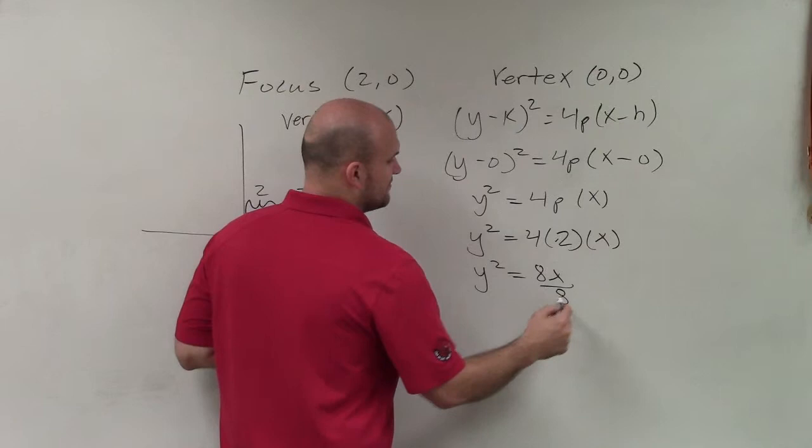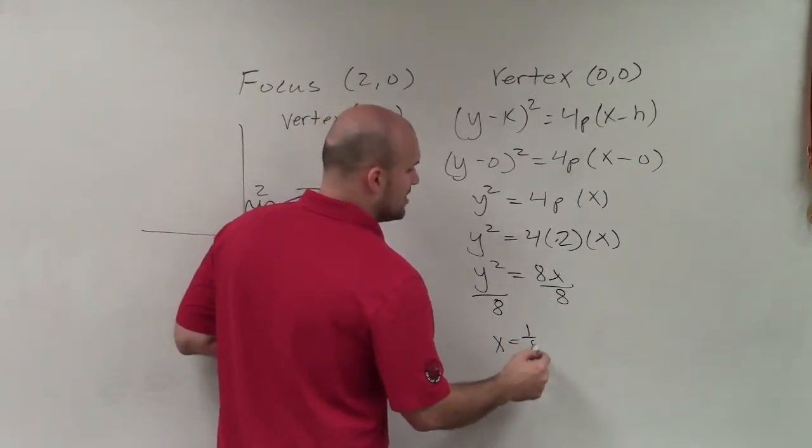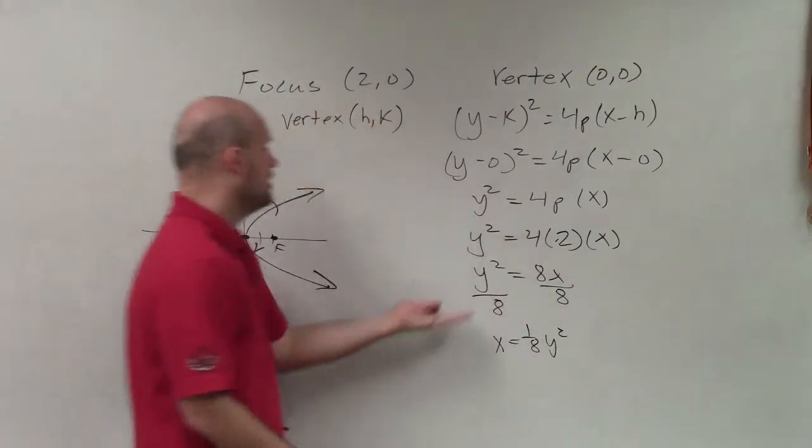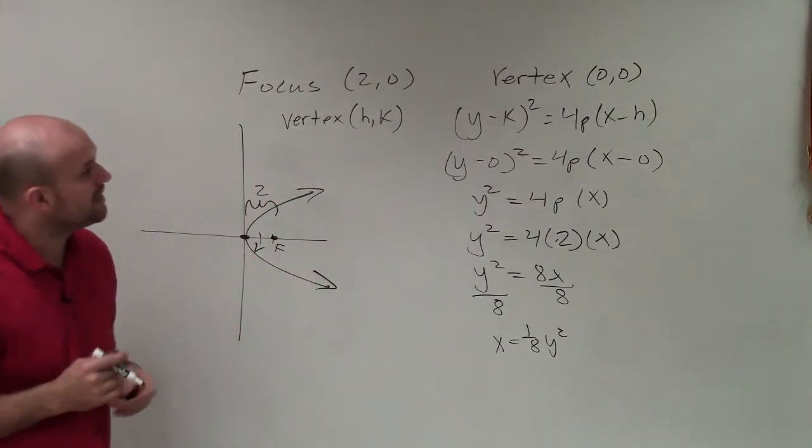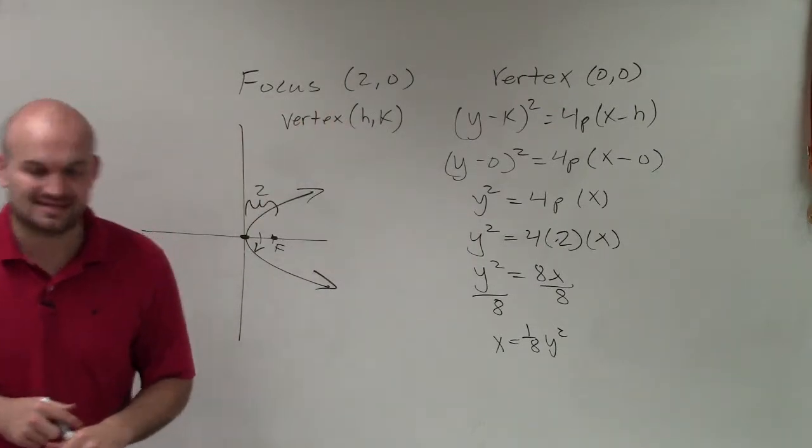Now to solve for x, I'm just going to divide by 8. And therefore, I have x equals 1/8 y squared. So there you go, ladies and gentlemen. That is how you write your standard form of a parabola when provided the focus and the vertex. Thanks.